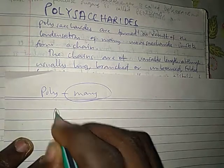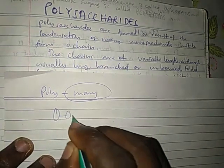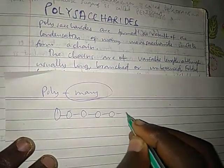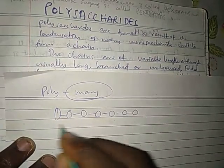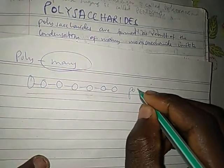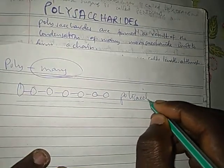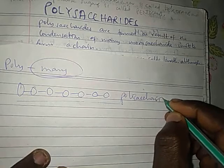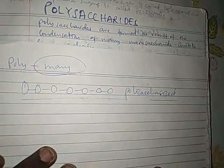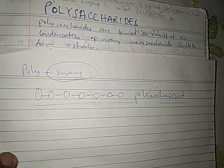Assuming this circle represents a monosaccharide, then if we have many monosaccharides joined in this way, this molecule can be called a polysaccharide. In other words, polysaccharides are polymers of monosaccharides.